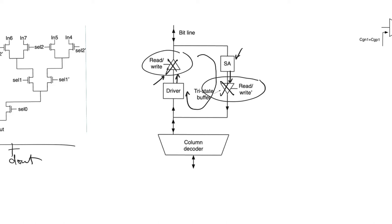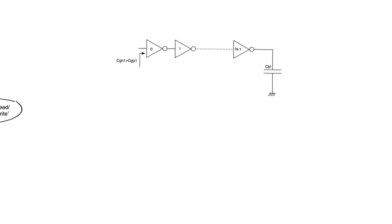The driver receives the value to be written from the column decoder. The column decoder acting as a demultiplexer is not capable of driving that value, so we need the driver to provide low-impedance drive for the bit line — charging up its large capacitance quickly. As discussed when we covered logical effort in module four, this can be done using a chain of inverters, which optimizes the delay of the path.